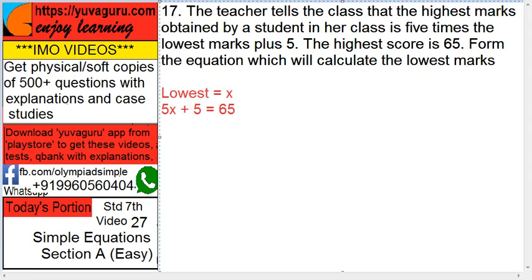Let the lowest marks equal x. So 5 times the lowest is 5x, and 5 more, so plus 5, equals the highest, 65. So 5x + 5 = 65 — this is the answer. Now, if you want to solve this, you can solve this.